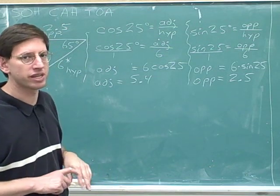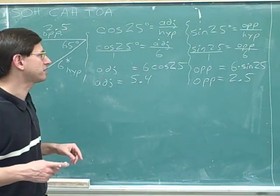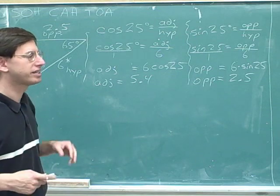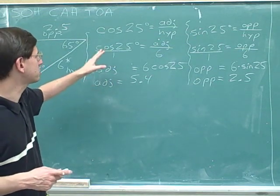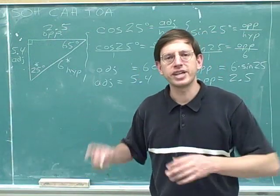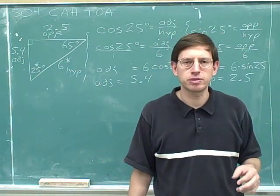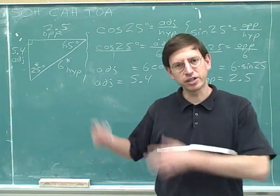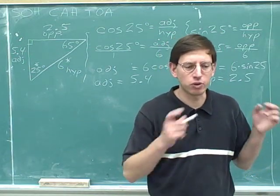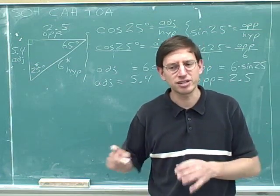But if you go back to the previous problem, you'll see that in that problem we used the cosine to find the horizontal length and the sine to find the vertical length — the opposite of this problem. So what I'm trying to point out is that you can't just memorize 'I use the cosine to find the horizontal leg,' because it doesn't always work that way. Sometimes we use the cosine to find the horizontal leg, but sometimes we use the cosine to find the vertical leg — it just depends on the details of the problem.